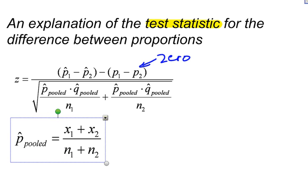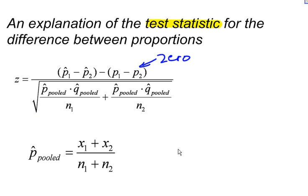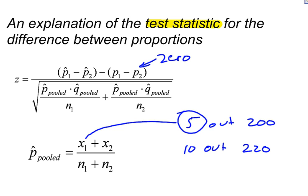Let me make this just a little bit bigger and you can see it. Lots of times when you have an example or a problem in your textbook or whatnot, they're going to tell you something like 5 out of 200 males prefer this and 10 out of 220 females prefer this. So this right here, the 5 would be your x sub 1, the 10 would be your x sub 2, and then the 200 and the 220 would be your n sub 1 and your n sub 2.